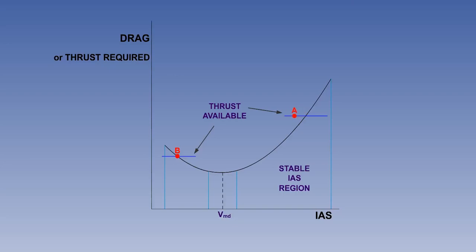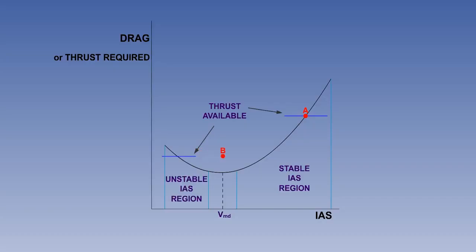Similarly, if the aircraft were to lose speed, drag would decrease and the aircraft would regain the lost speed. Considering the aircraft at speed B, if it gains speed, drag decreases and with an excess of thrust, the aircraft speed will continue to drift up to VMD. In this area of the curve, the aircraft is speed unstable.